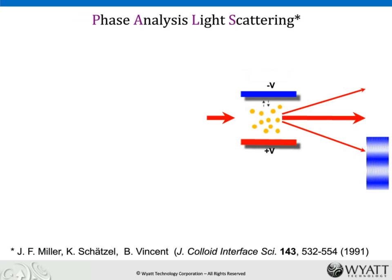The technique we use is called phase analysis light scattering. A laser shines on a fluid sample between two plates. The electric field drives the particles up and down. Most light goes straight through, but some scatters off the particles toward a detector. Dynamic light scattering is very sensitive to measuring particle motion, but if all particles are moving together, there is no signal from DLS — so it can't be used directly. A modification called heterodyne scattering allows you to make a particle mobility measurement by splitting some light around the cell and interfering it with the scattered light at the detector.